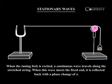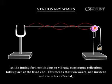When the tuning fork is excited, a continuous wave travels along the stretched string. When this wave meets the fixed end, it is reflected back with a phase change of pi. As the tuning fork continues to vibrate, continuous reflections take place at the fixed end.